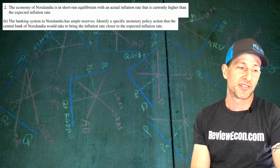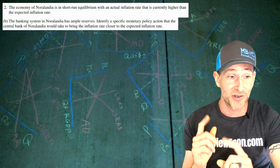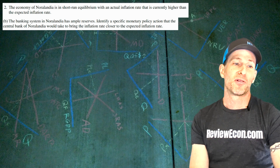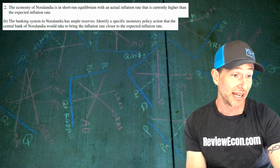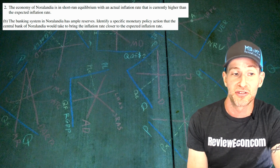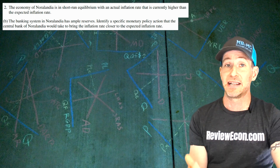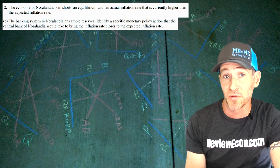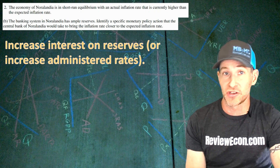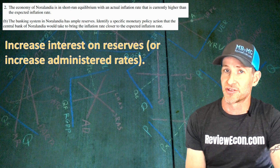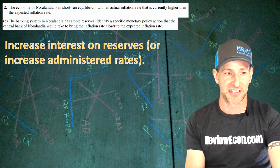Moving on to the next part of question two: the banking system has ample reserves — this is one of the first questions about the ample reserves system. We need to identify a specific monetary policy action the central bank of Norlandia would take to bring the inflation rate closer to the expected inflation rate. We want to lower inflation, and in order to do that we need to raise interest rates. In an ample reserve system, we're going to be increasing interest on reserves — or you could also say increase administered rates. Those are the answers I expect, because this is an ample reserve system, not a scarce reserve system.